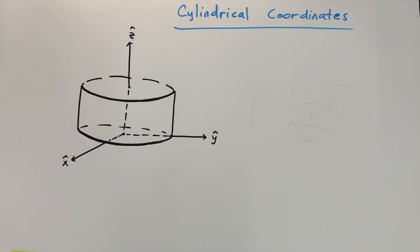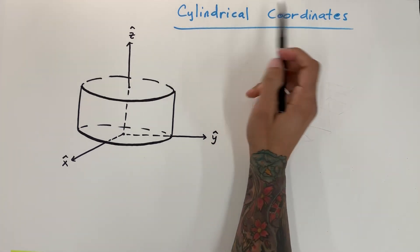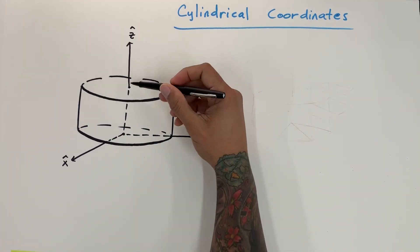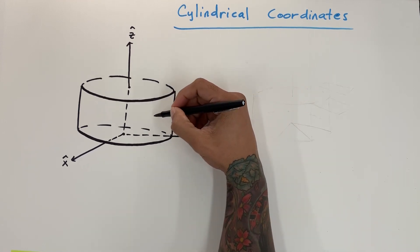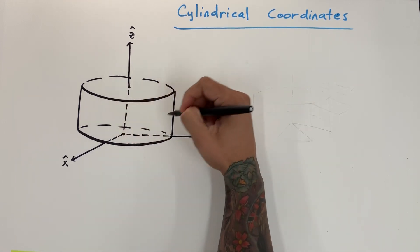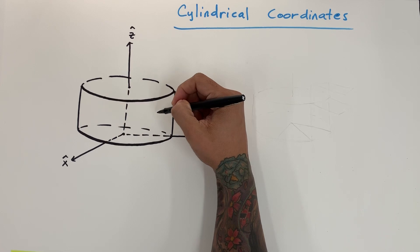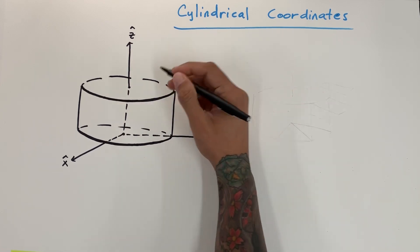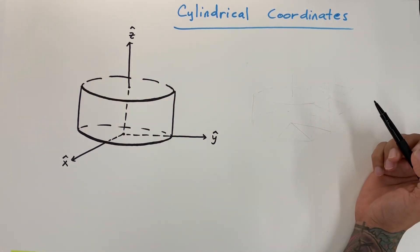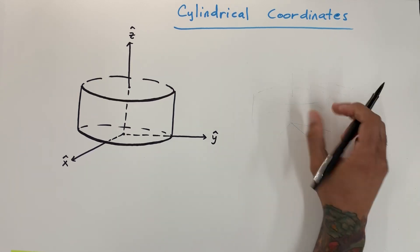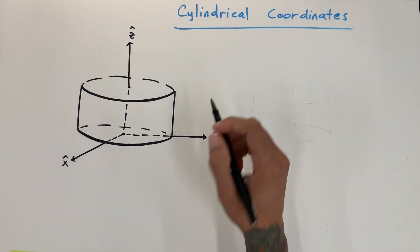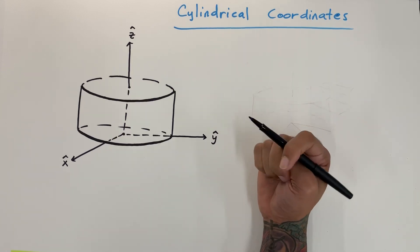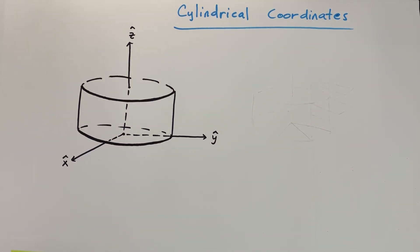Hey guys, welcome back to Genius Learning. In this video I want to show cylindrical coordinates — the position of a particle anywhere along the surface of a cylinder or along the inside, and also a differential volume element, just like in the previous videos for the sphere.